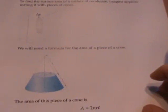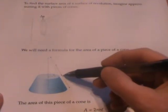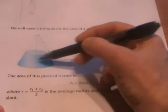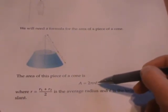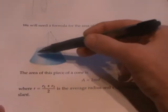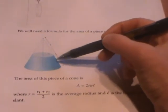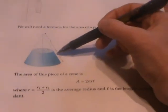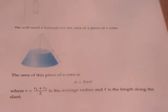So we're going to need a formula for the area of a piece of cone. And this formula is that the area of this blue shaded piece of a cone is given by 2πrL, where r is the average radius halfway in between the radius at the smaller end and the radius at the bigger end of this piece of cone. And L is the distance shown here, the slant height of this piece of cone.